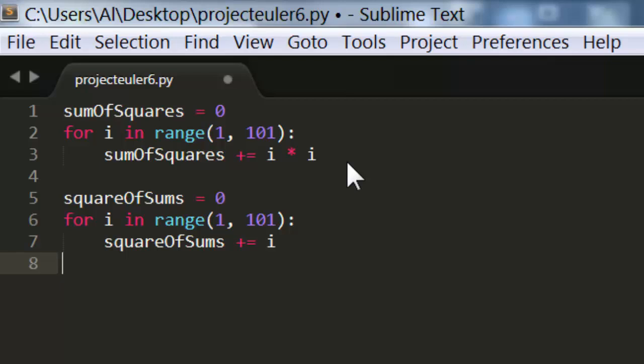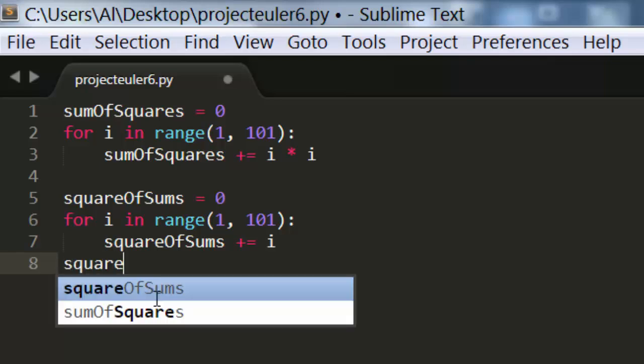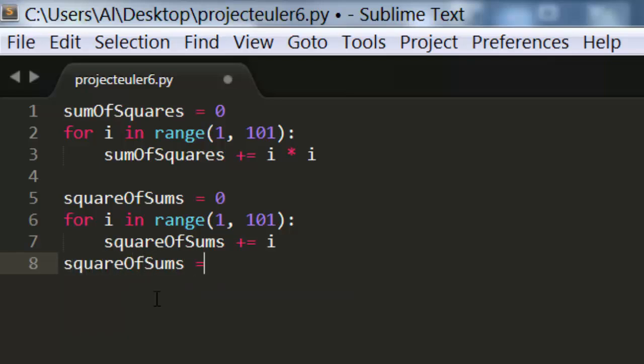And then finally after adding up, or summing, those numbers 1 to 100 here, we then want to square that. So we'll just take whatever number is currently in there, and then multiply it by itself. And that will be the new value of square of sums.